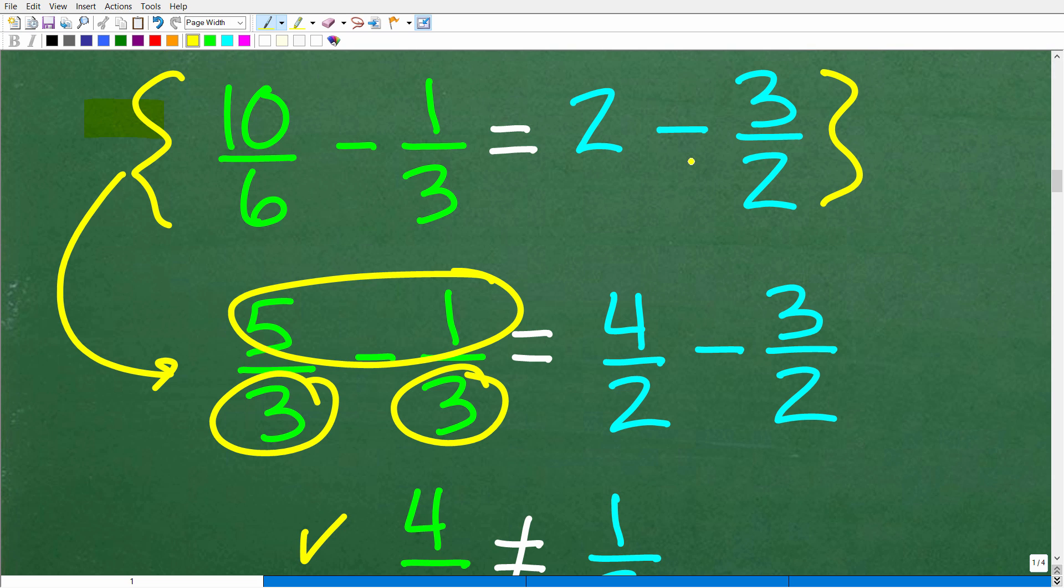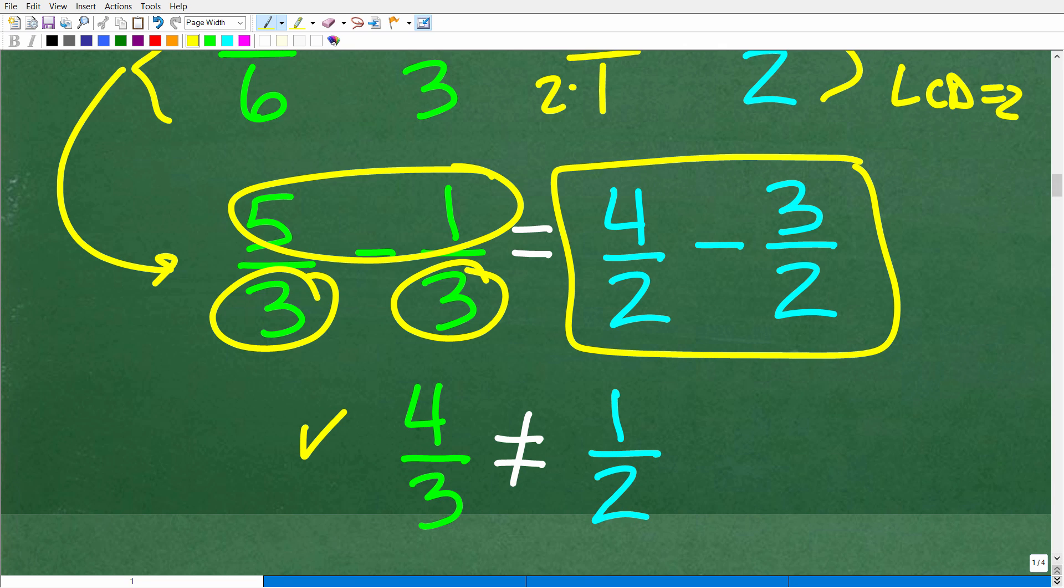10 over 6 minus 1 third, I can simplify that fraction to 5 thirds. We have 5 thirds minus 1 third. The denominators are the same, so we're going to subtract the respective numerators. 5 minus 1 is 4 thirds. On the right-hand side we have 2 minus 3 over 2. We need to find the lowest common denominator, which is 2. So we're going to have 4 over 2 minus 3 over 2, which is 1 over 2. Here we have 1 half, here we have 4 thirds. Is 4 thirds equal to 1 half? No, it's not.